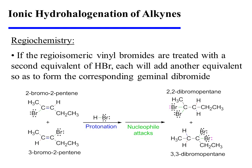If these regioisomeric vinyl bromides were treated with a second equivalent of HBr, each would add another equivalent of HBr to form the corresponding geminal dibromide. Although the first step had no basis for selectivity, each of these vinyl bromides will be selectively protonated so as to form only the resonance-stabilized carbocation, which then attracts bromide, leading to geminal dibromide products. Nevertheless, this reaction yields two geminal dibromides and not a single product, so we do obtain a mixture.